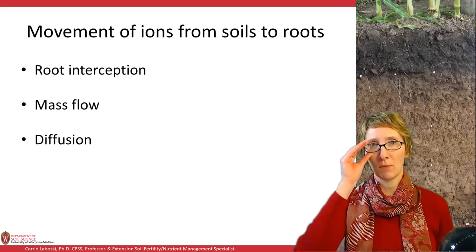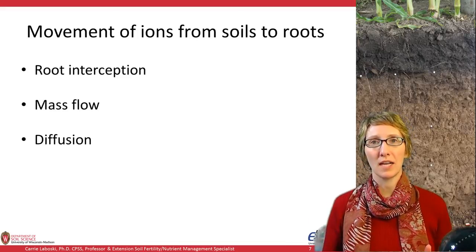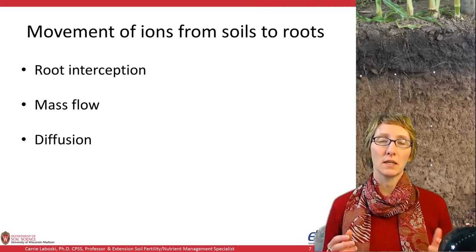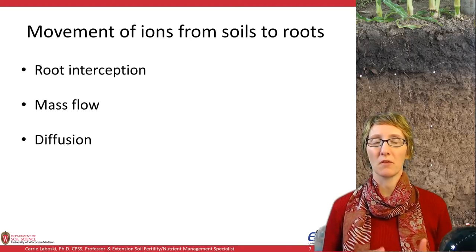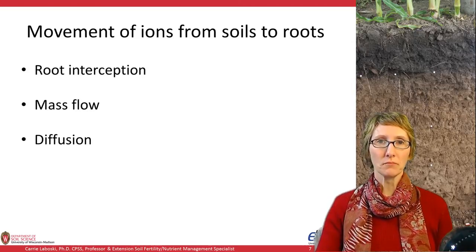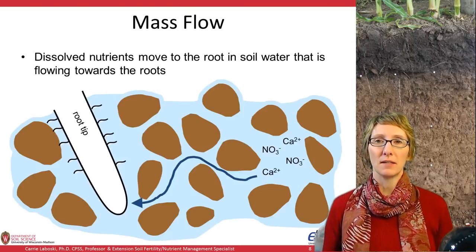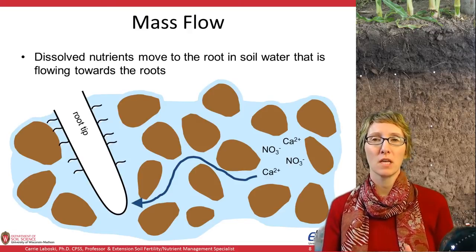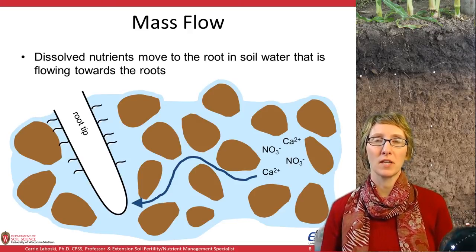Now I want to spend a little time talking about the movement of ions from soils to roots, because this is really important and not every plant nutrient behaves the same way. There are three key ways that nutrients move to the root: root interception, mass flow, and diffusion. In the next few slides, as we talk about these different methods of nutrient movement to the root, I have a little cartoon I've drawn so that you can have a better understanding of what's happening.